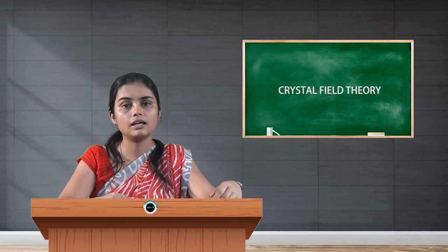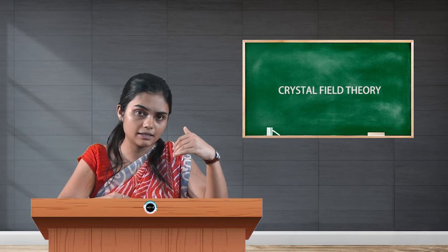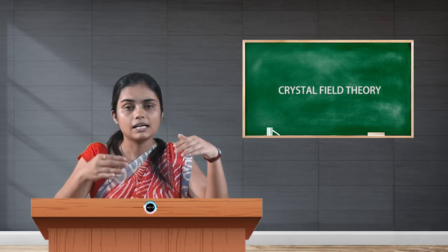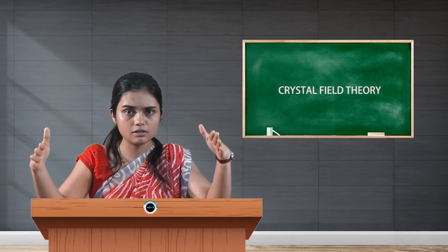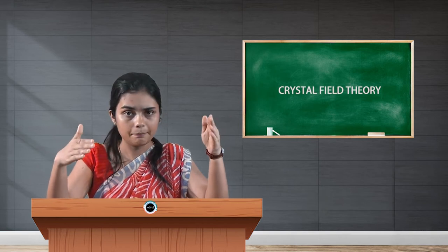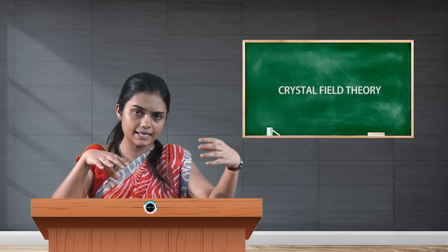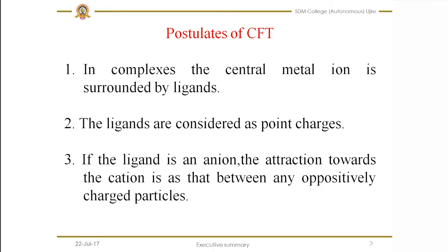According to this theory, the interaction between the metal and ligand is due to electrostatic interaction — just like the interaction between a positive charge and a negative charge. If you consider the ligand as an ion, that means negatively charged, then the attraction towards the metal ion should be like the interaction between a cation and an anion. If one is negatively charged, then the other has to be positively charged.